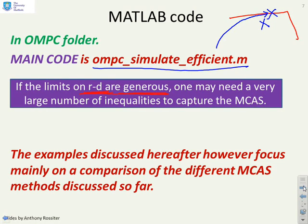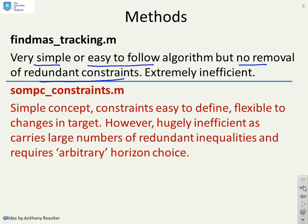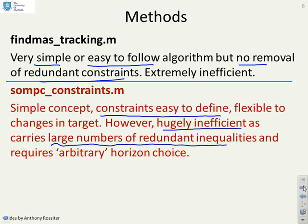We will now do a simple comparison of the different MCAS methods. Method one, find_MAS_tracking, was very simple code, easy to follow, but had no removal of redundant constraints either at the end or in the middle, making it extremely inefficient. Method two, used in SOMPC constraints, was easy to define — just calculate predictions for a given horizon and ensure they satisfy constraints — but could be hugely inefficient due to carrying redundant inequalities, and also required an arbitrary choice of horizon large enough to be valid.